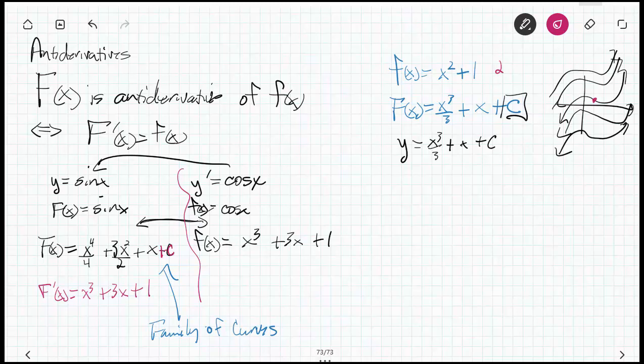For example, that kind of looks like 2 comma 1. Let's say I know that the antiderivative of this passes through 2 comma 1. It's easy. I would put a 1 for the Y. I would put a 2 for the X, so I get 8 thirds plus 2 plus C. And now I can solve for C. 8 thirds plus 6 thirds is 14 thirds. 3 thirds minus 14 thirds is negative 11 thirds equals C. So that tells me that this is called the general antiderivative, and it produces a family of curves. And this is the specific antiderivative for the initial value of 2, 1.